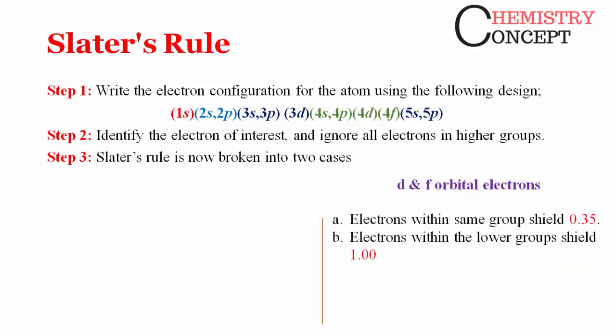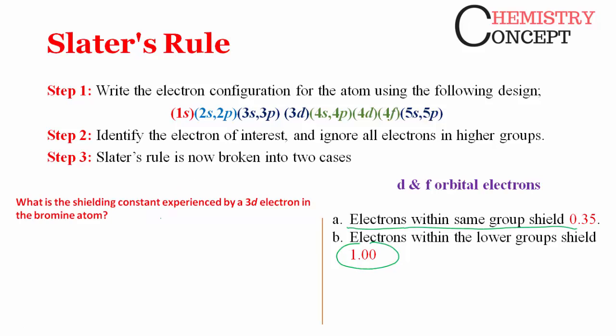For d and f orbital electrons, the rules are slightly different. Electrons within the same group still shield 0.35 each. However, all electrons in lower groups — regardless of how many shells below — shield 1.0 each. There is no distinction between n−1 and n−2 for d and f electrons.